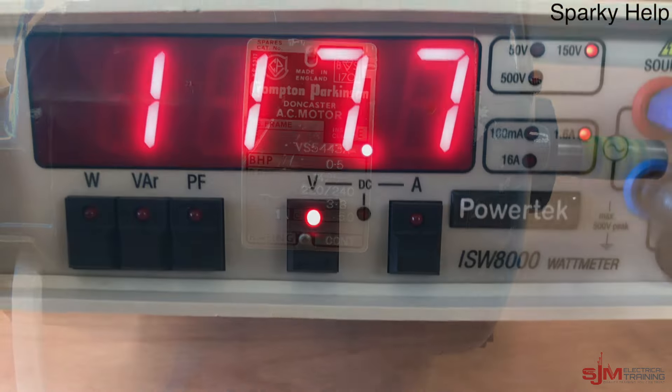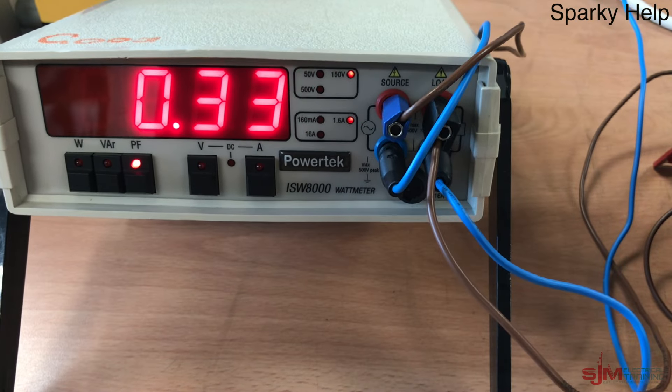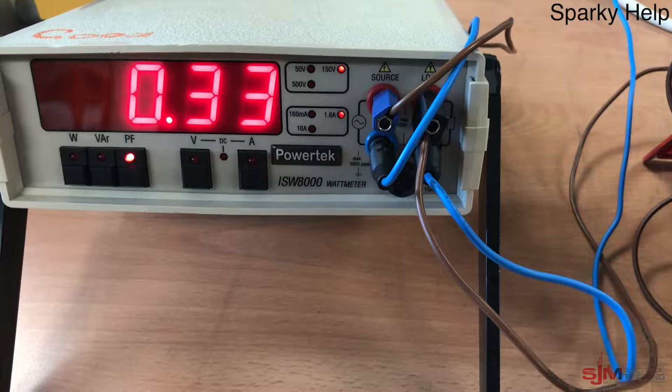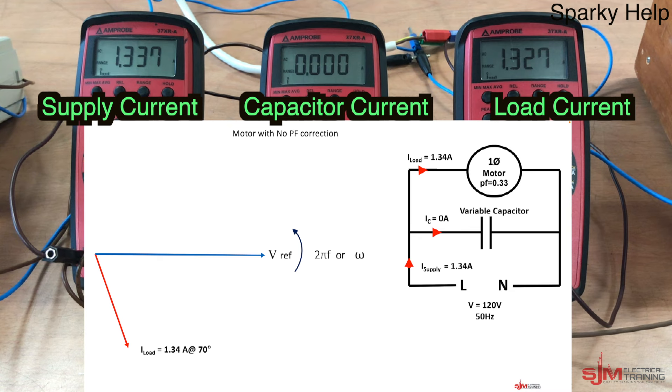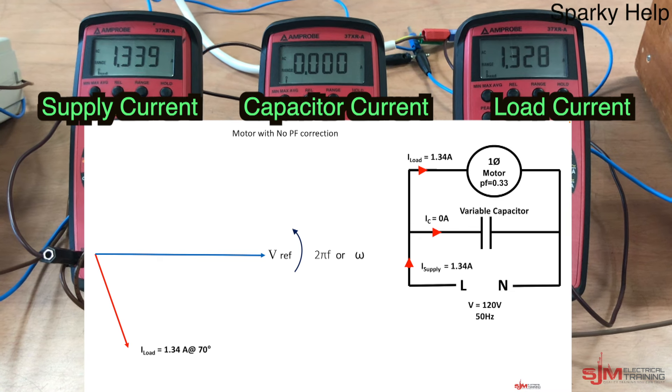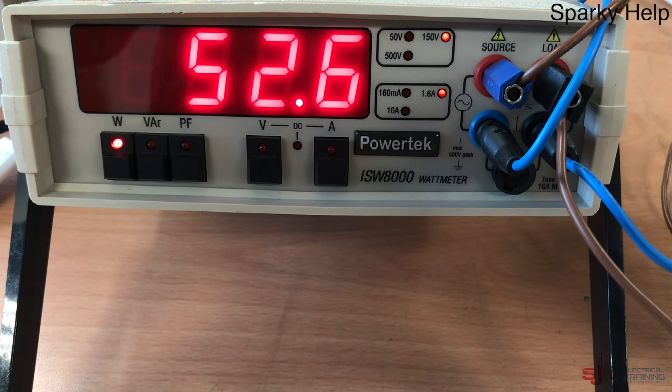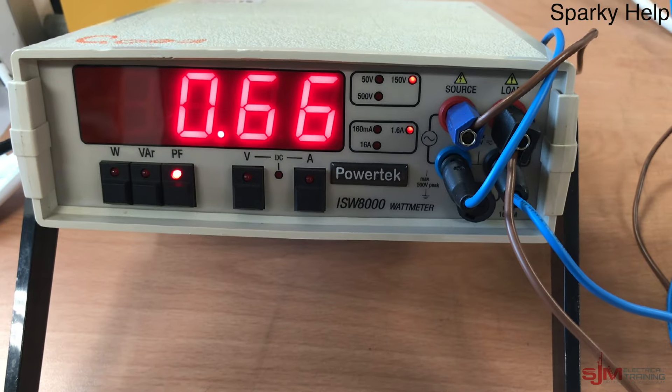So let's have a look at the actual motor. Here's a single phase motor. Connected to a 117 volt supply. The power factor without power factor correction. 0.33. And let's have a look at the currents that flow in each part of the circuit. So as you can see here. The current through IC is zero. And the currents through the other two are equal. Through the load and the supply. The power 52.6 watts.